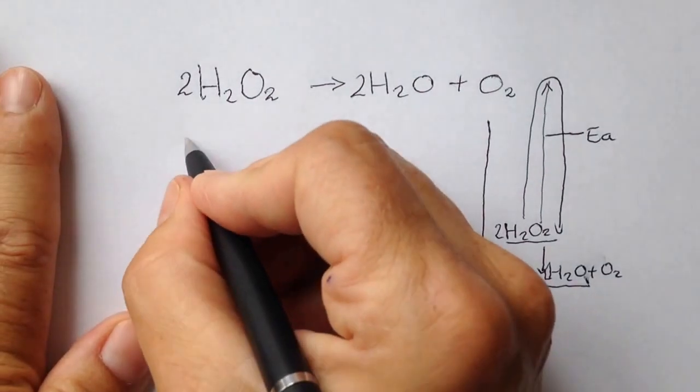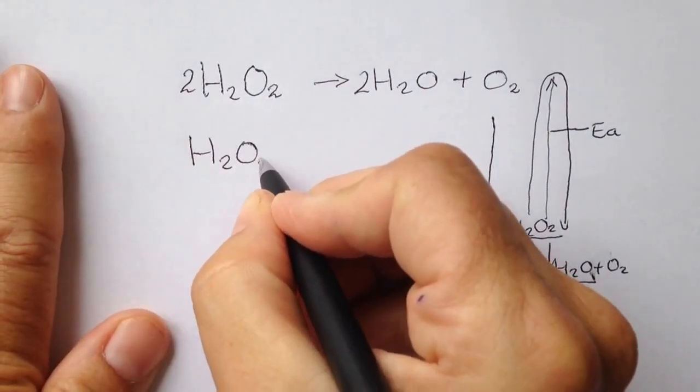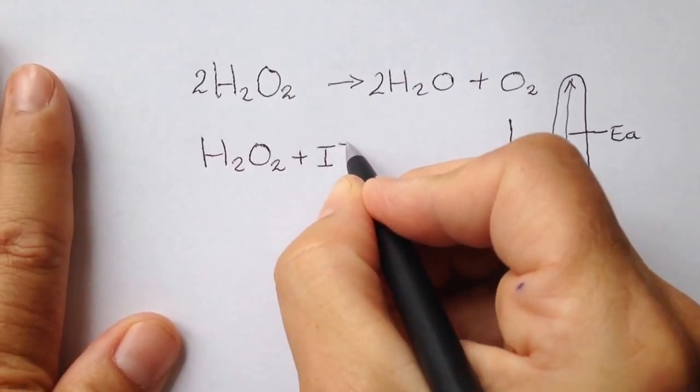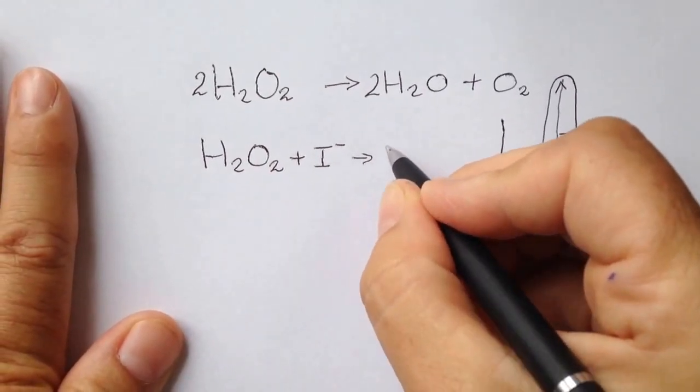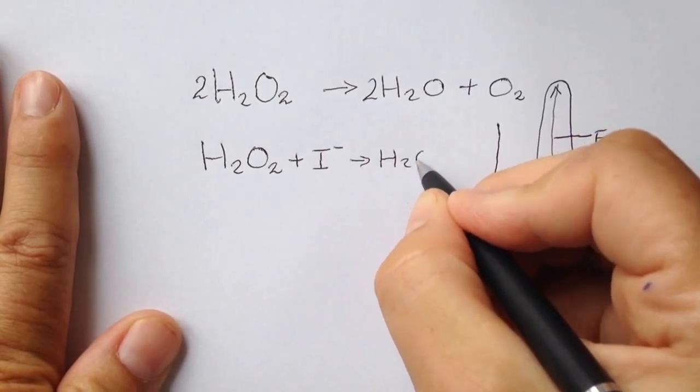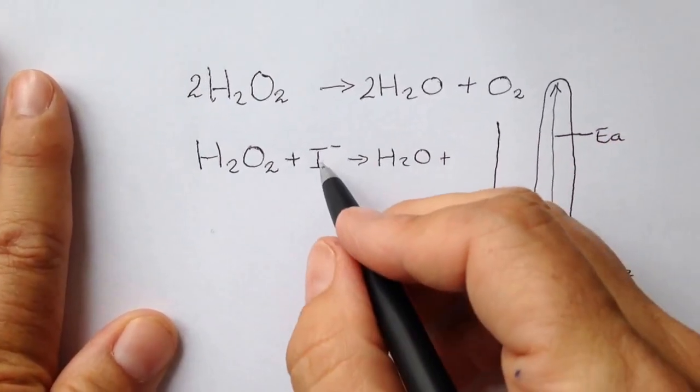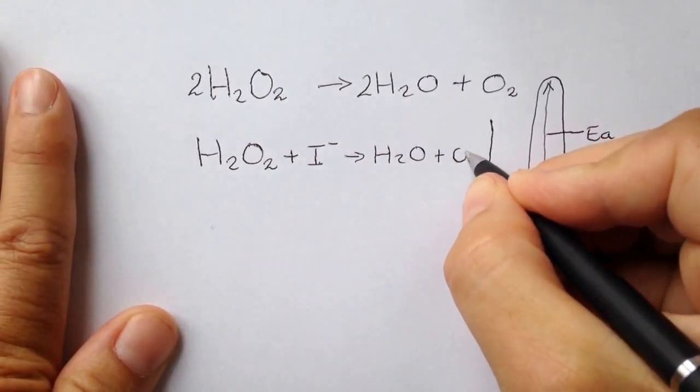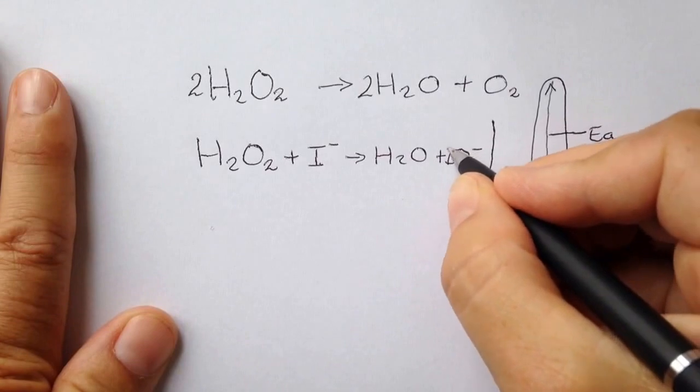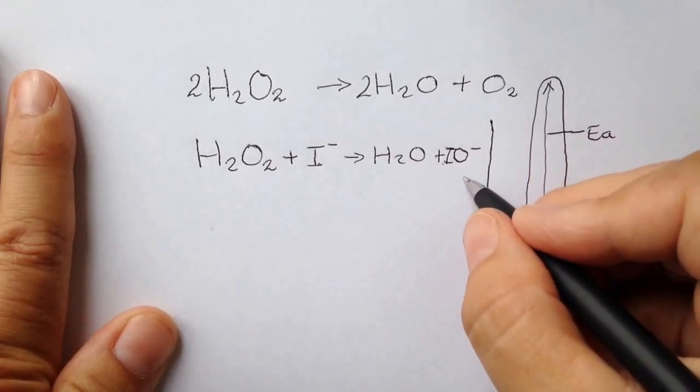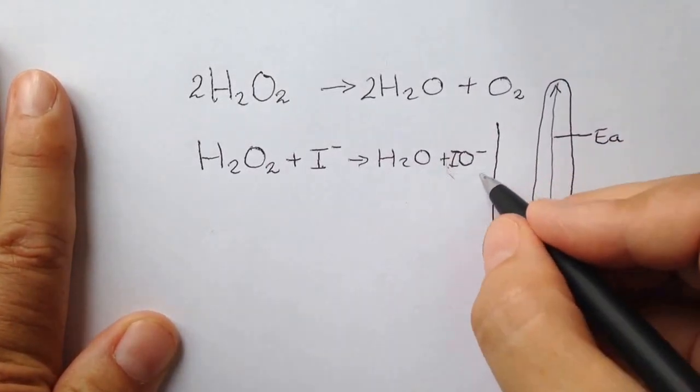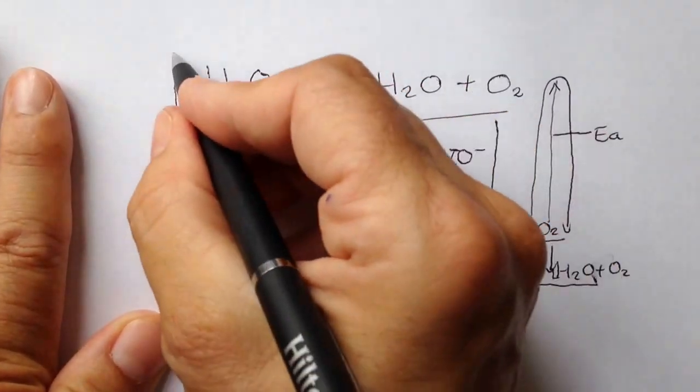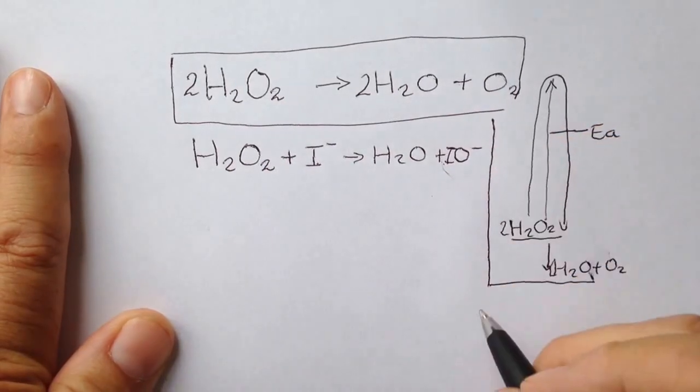One of the hydrogen peroxide molecules reacts with an iodide ion which then produces water and what is called an intermediate that must react with one of the oxygens to produce IO minus. Now this intermediate does not appear in the overall equation, so it must get consumed in the next step.